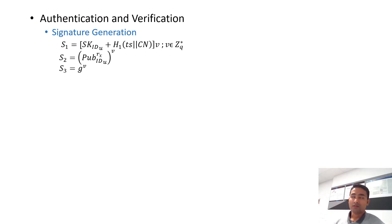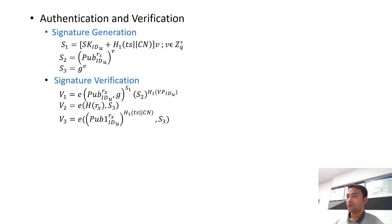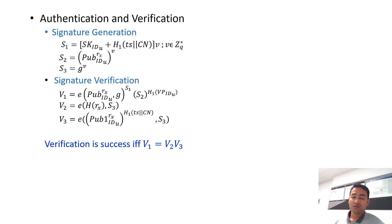In our proposed scheme, the edge router verifies the authenticity of a consumer before forwarding its interest packets into the network. We have introduced a signature mechanism that helps edge routers verify authorized consumers. At the consumer side, before sending any interest packet, a consumer generates a signature using their secret keys assigned by the content provider. The consumer also uses the current timestamp and the desired content name to generate the signature. The current timestamp is used to prevent replay attacks, as seen in the slide. At the edge router side, the router verifies the signatures using the public keys associated with that consumer. If the consumer is authorized and has a valid validity period, the edge router will forward their interest packets into the network — meaning no unauthorized or revoked consumers can send interest packets into the network.